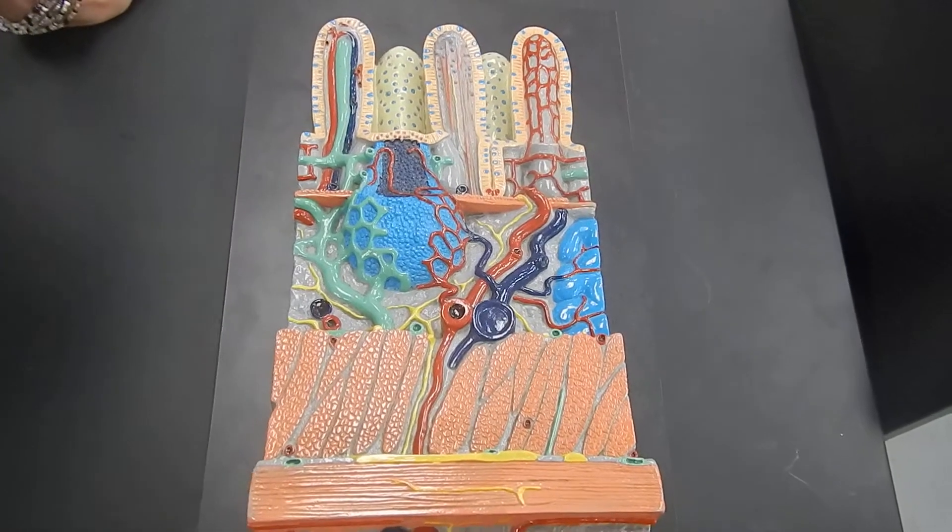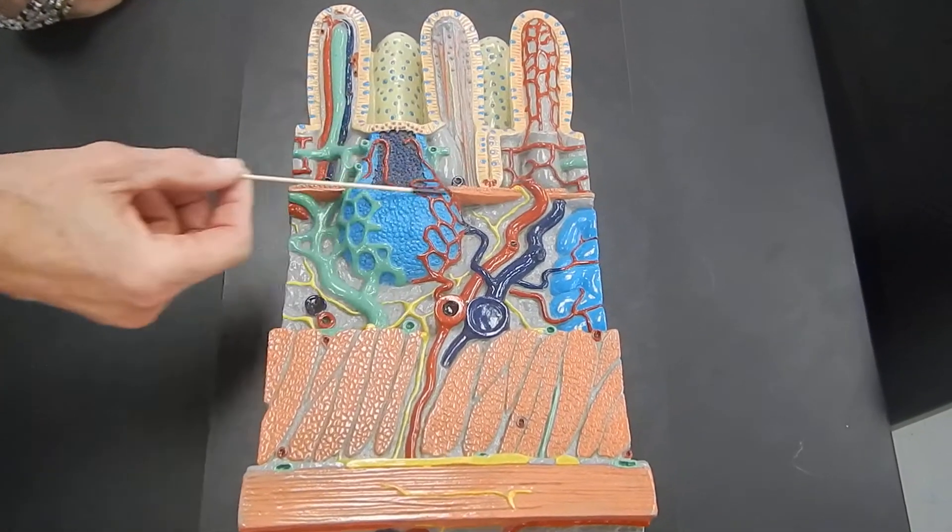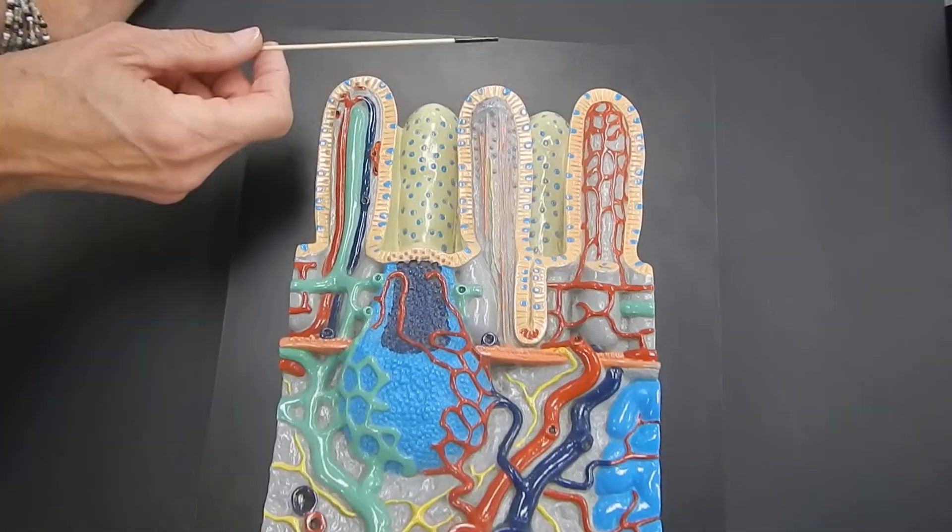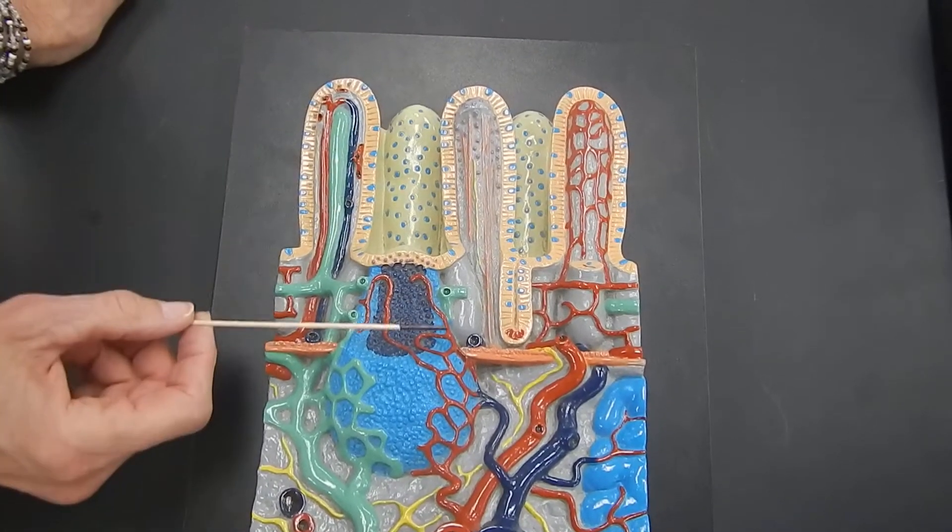And it has three different regions. This region, from this thin band of muscle towards where your food would go, this region is called the mucosa.